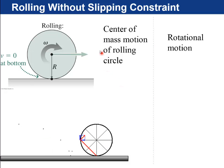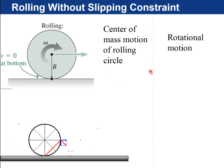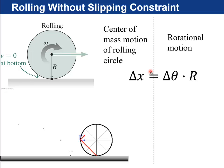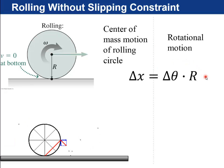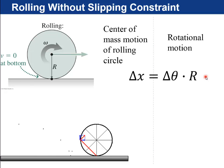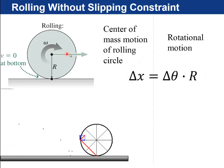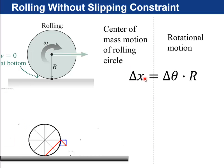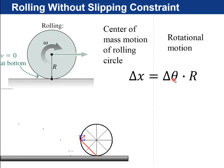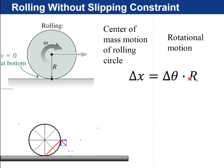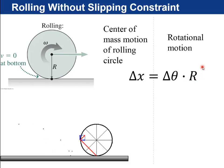Okay, so the rolling without slipping constraint is an equation. There's actually three equations, but the textbook really dwells on one of them. So the center of mass motion of this axle is delta x is equal to delta theta, how much the wheel rotates, times r, the radius of the wheel.